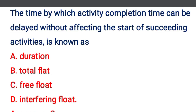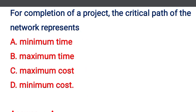Next question: the time by which an activity's completion time can be delayed without affecting the start of succeeding activities is known as — option A: duration, option B: total float, option C: free float, option D: interfering float. The correct answer is option C: free float.